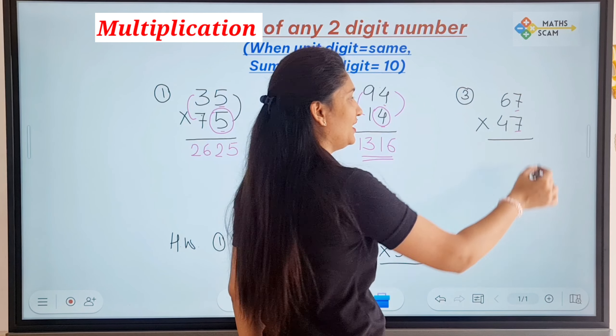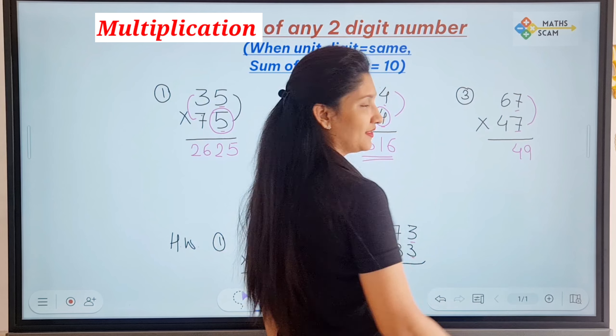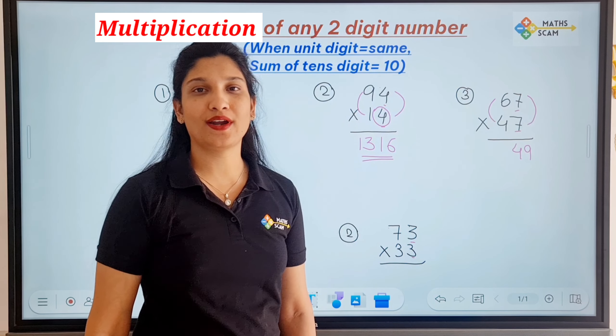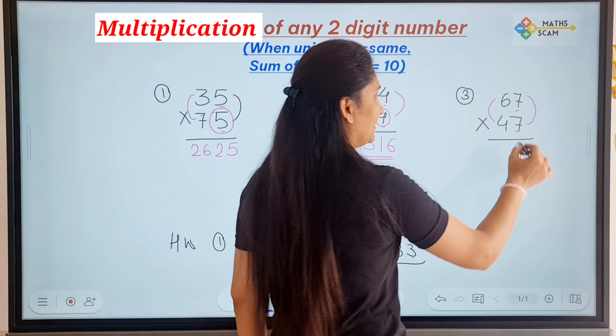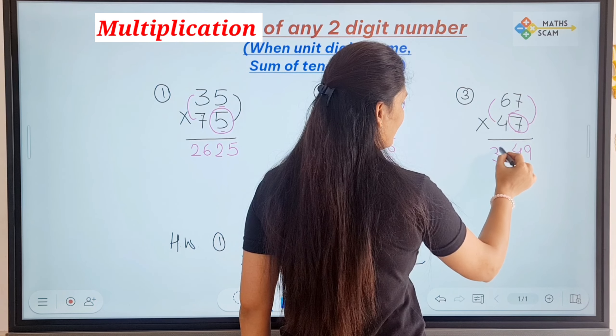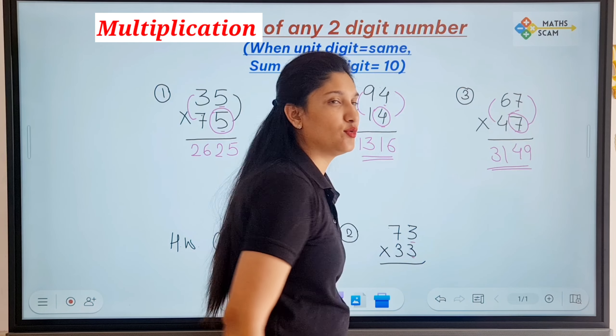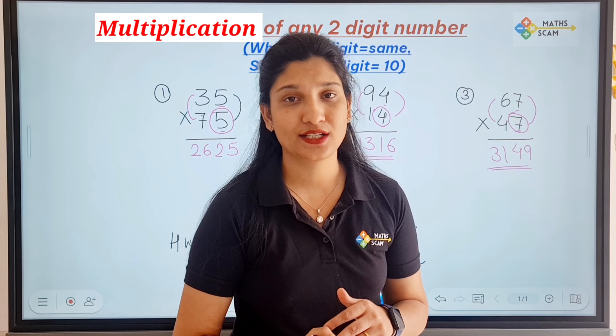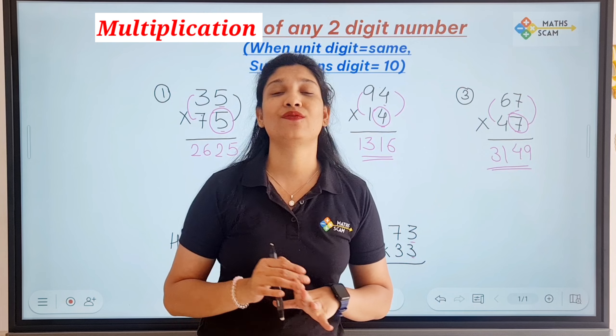And the last question: 67 times 47. 7 times 7 is 49. 6 times 4 is 24. 24 plus 7 is 31. So the answer is 3149. Guys, as you practice, your answer will be faster.